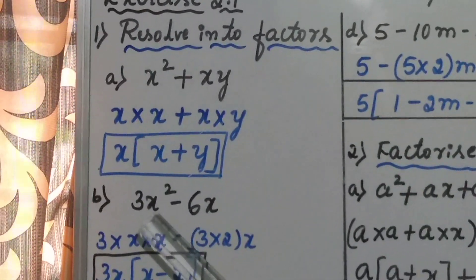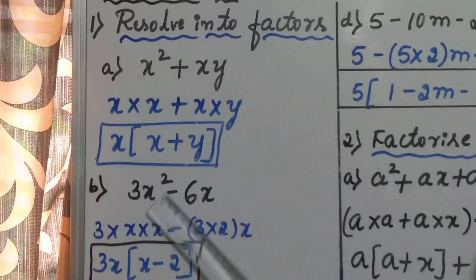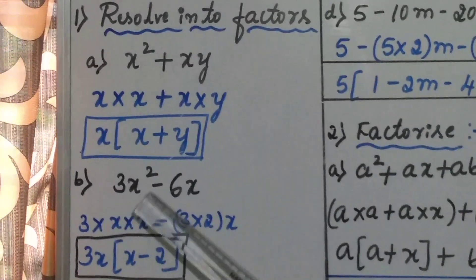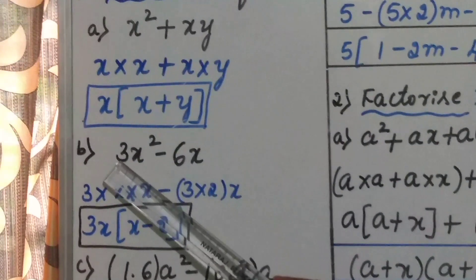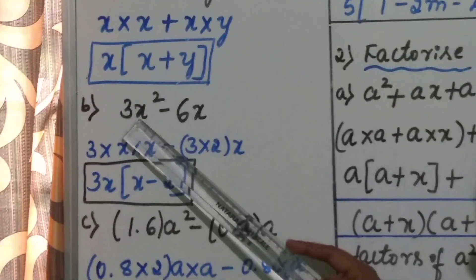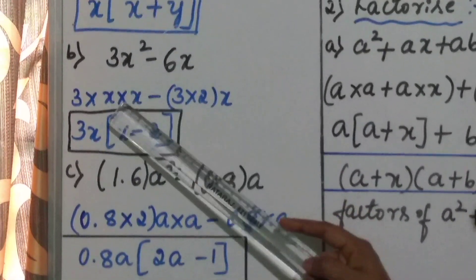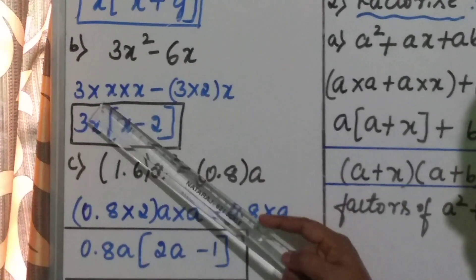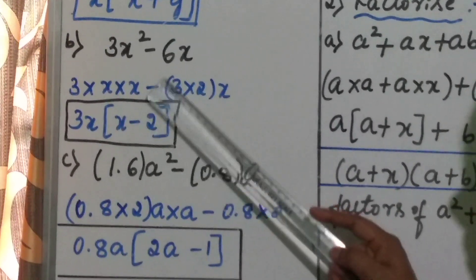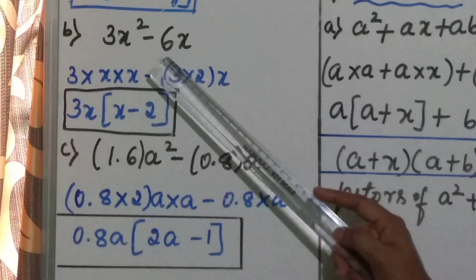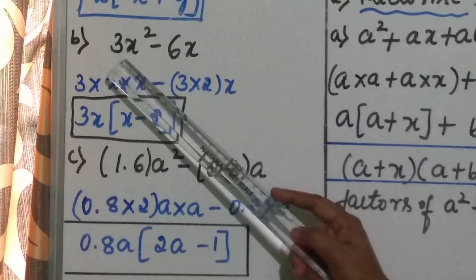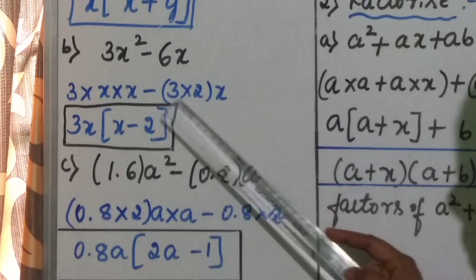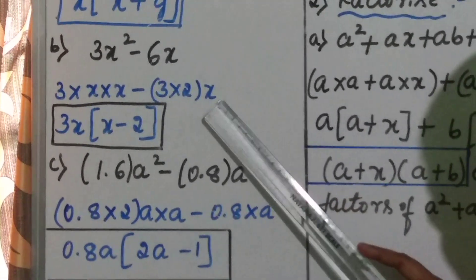Another example — second example: 3x square minus 6x. Here, 3 as it is you write. x square means how many times you multiply that variable? 2 times, so x into x. Therefore 3 into x into x minus, and the prime factors of 6 are 3 into 2, so 3 into 2 into x.